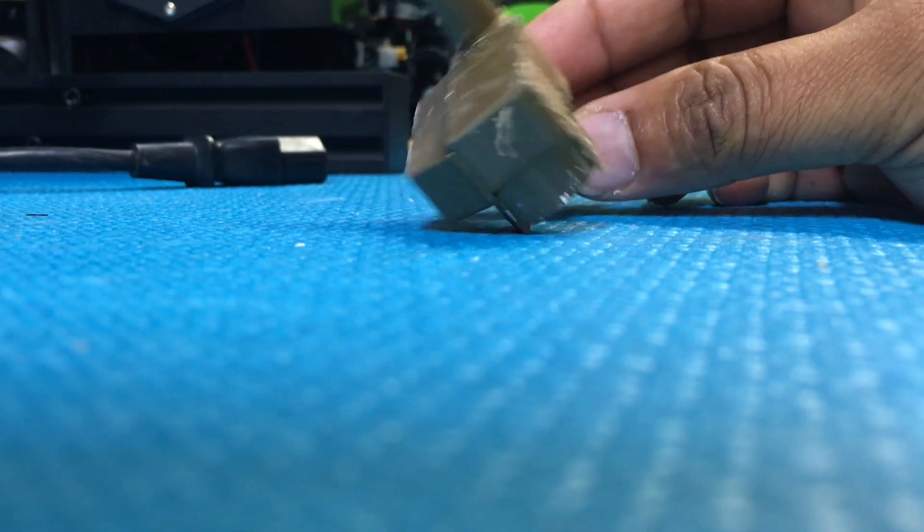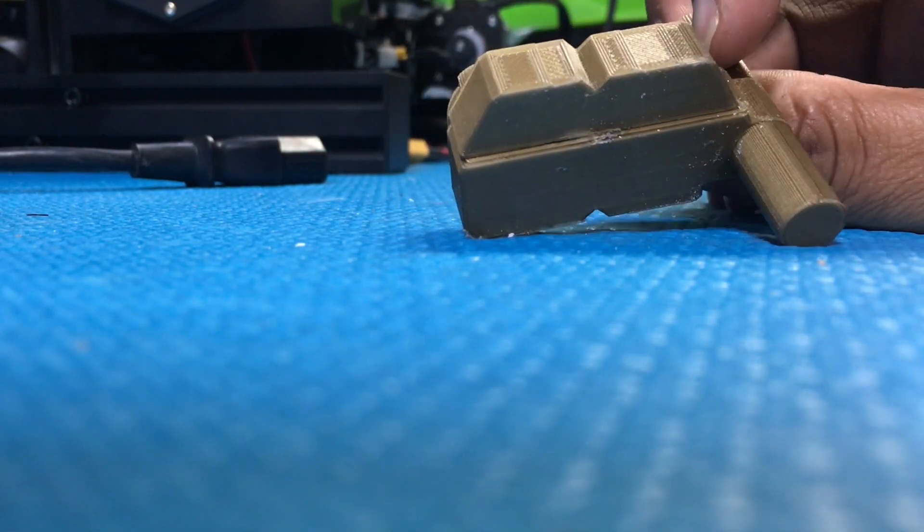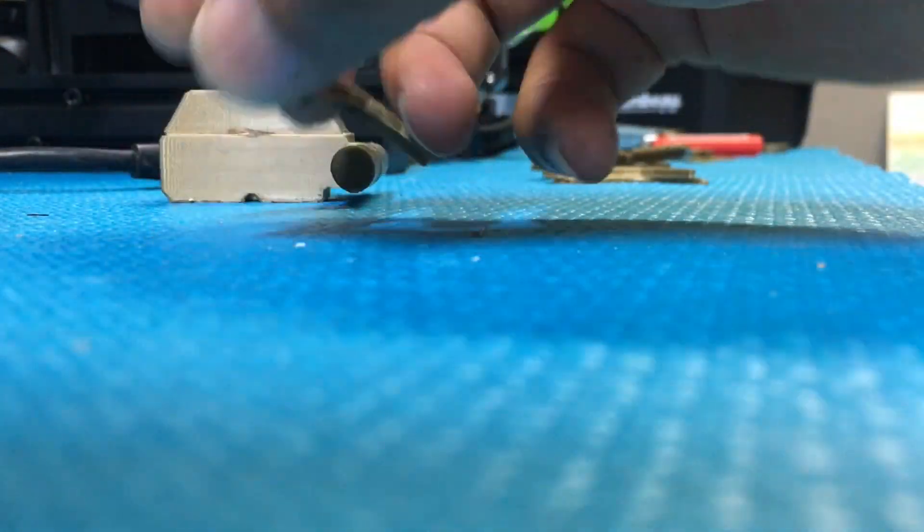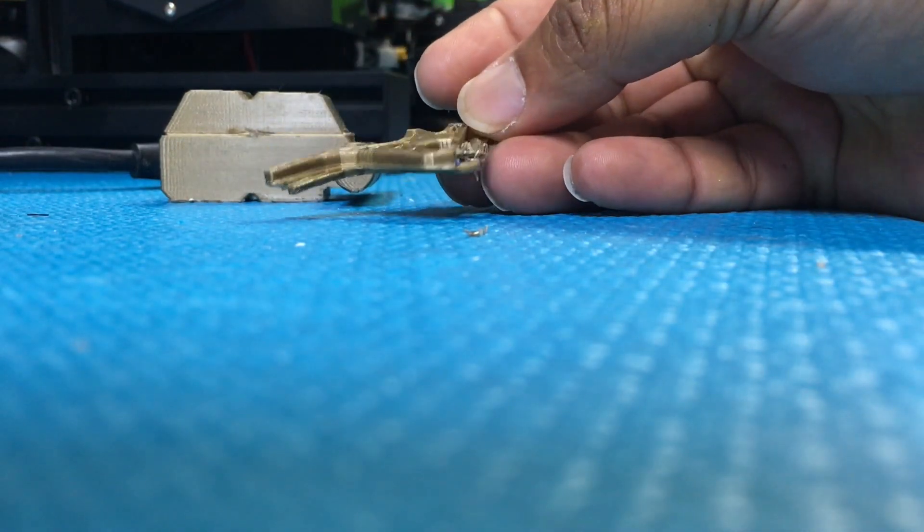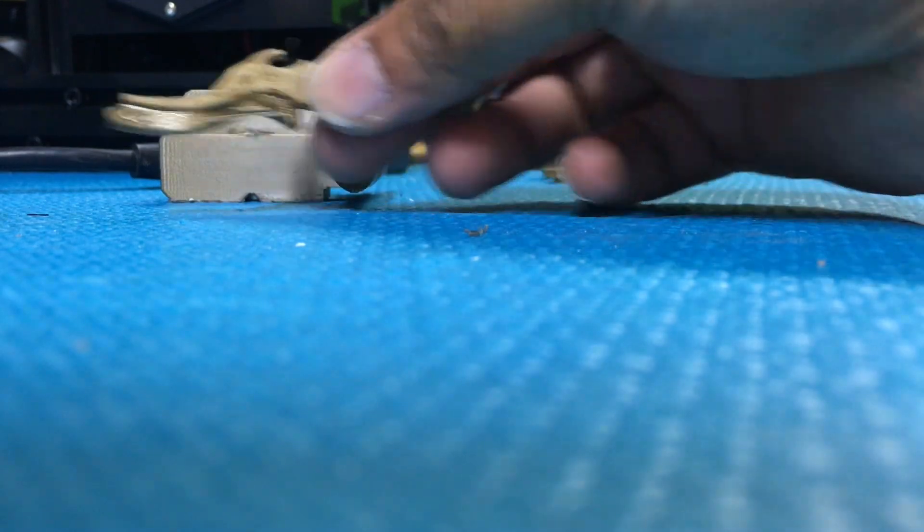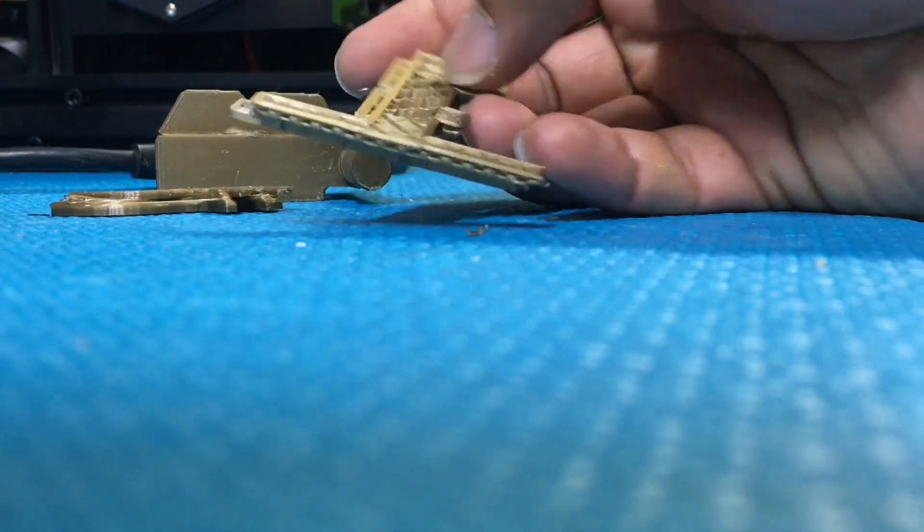As you can see here, I have a model and it has a pretty severe case of layer shifting. These were all supposed to be part of the same model. I printed them all separately and I was getting the same result on every single one.